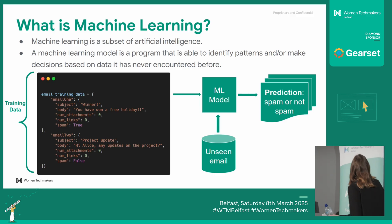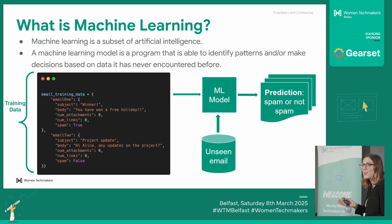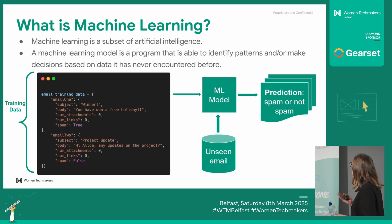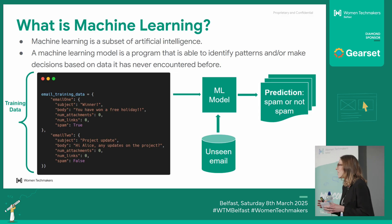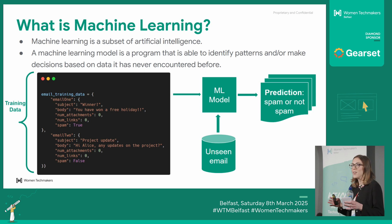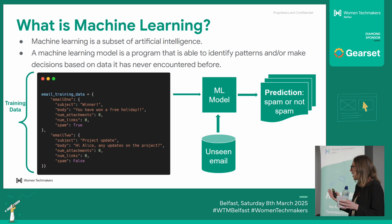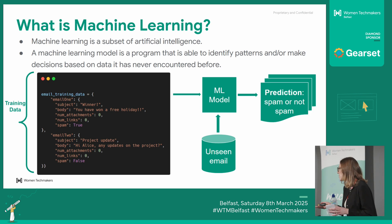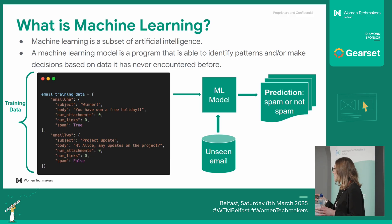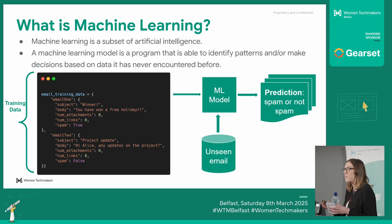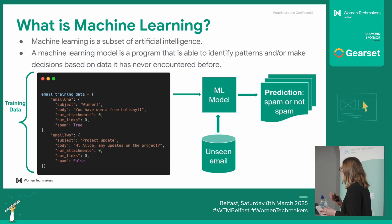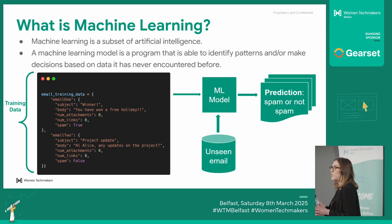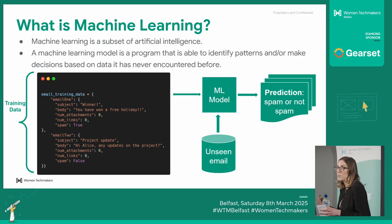There's obviously growing awareness of what it is with ChatGPT and everything, but it is a subset of AI. A really simple example of a machine learning model would be a program that can see patterns in data, and some models can make predictions based on data that they've never seen before.